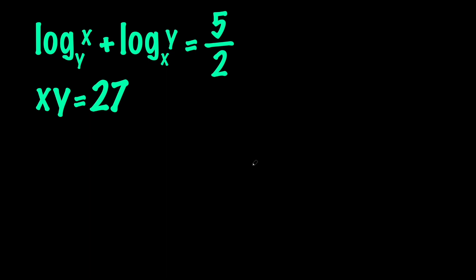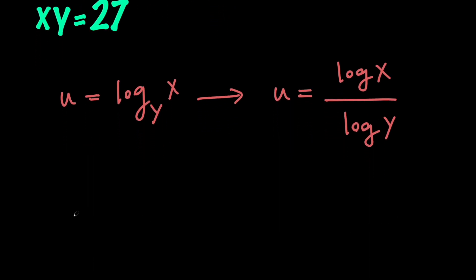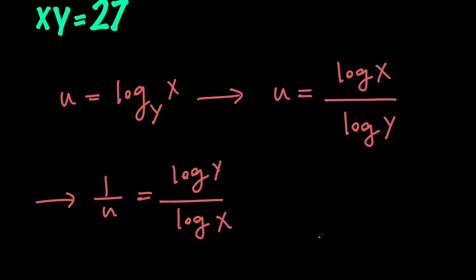To do that we need to use the substitution method. Let's say that u equals log x with base y. Next, let's apply the change of base formula, so we have u equals log x divided by log y. Flipping both sides gives 1 over u equals log y divided by log x, and applying the change of base formula backwards, 1 over u equals log y with base x.